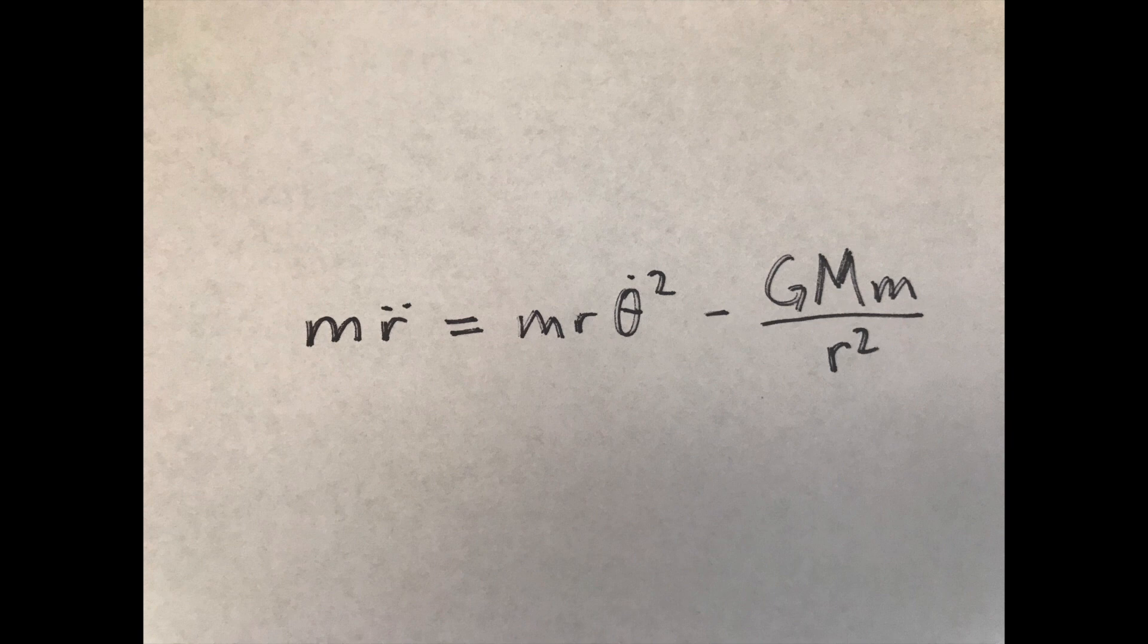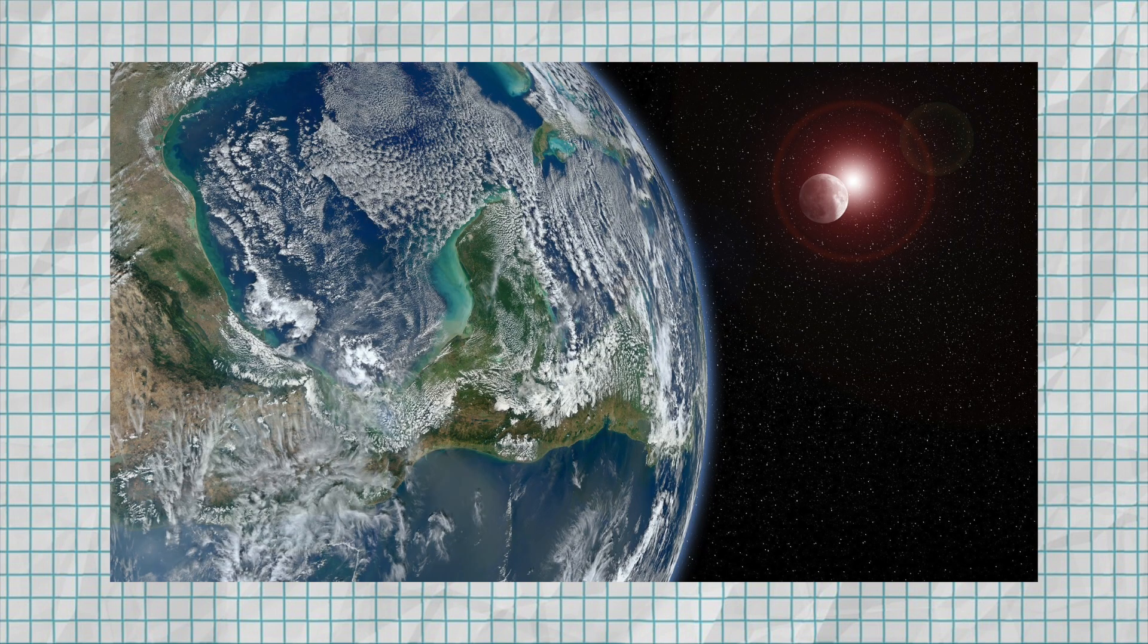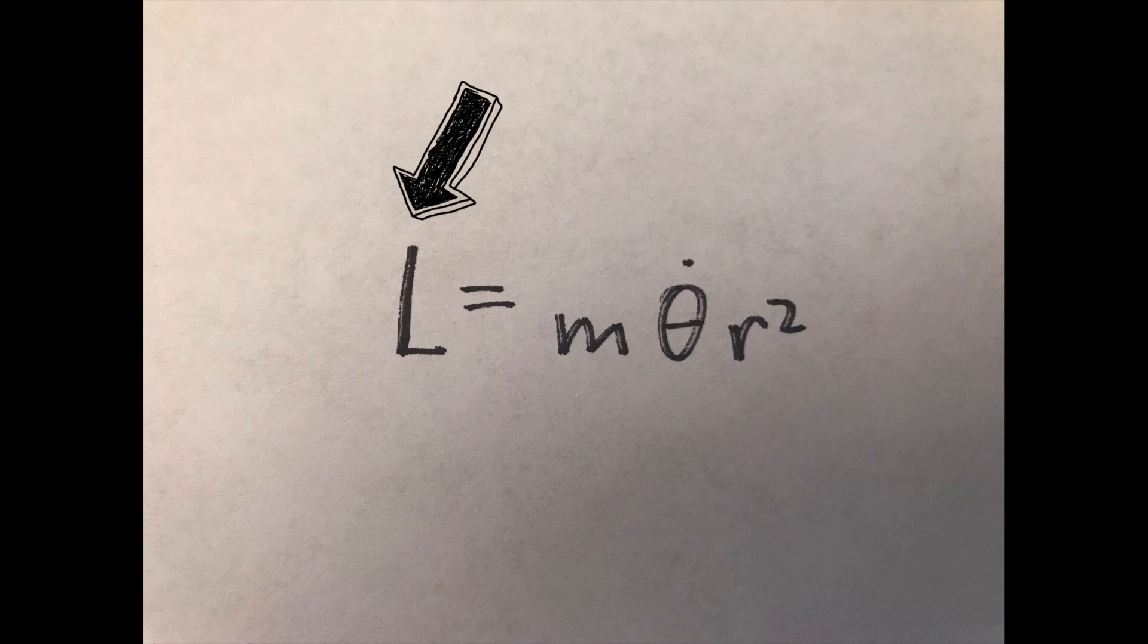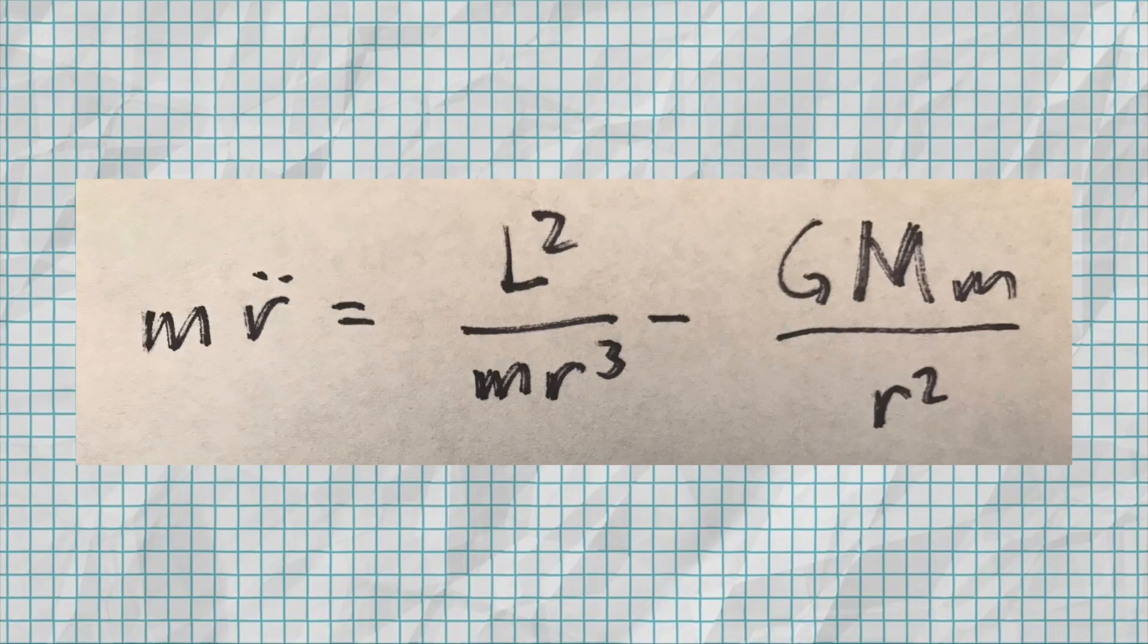there's a simple trick we can use to make it much simpler. The laws of physics tell us that angular momentum is conserved, so this quantity will never change throughout the entire orbit of the planet. The angular momentum is directly related to the rate of change of the planet's angle, or its angular speed. Because of this, we can replace our nasty theta term in the original equation with an angular momentum term instead, and the equation becomes much easier to solve.